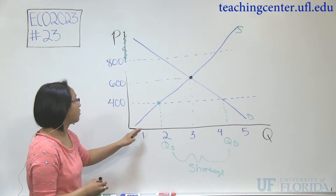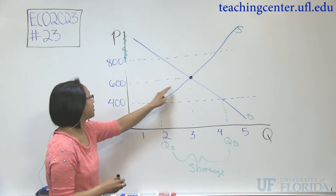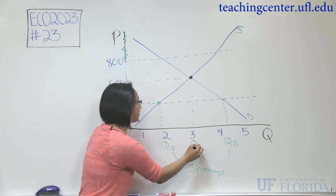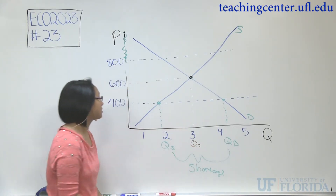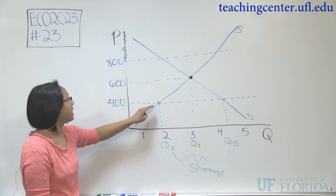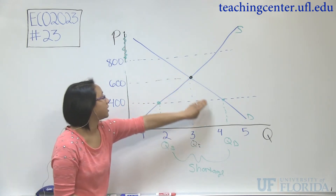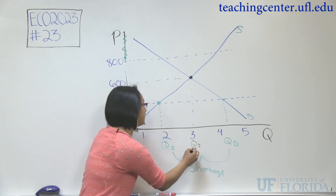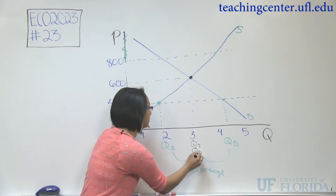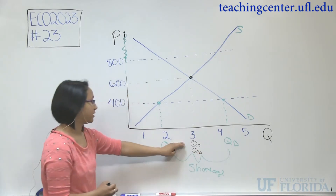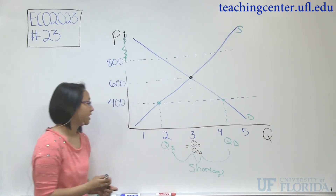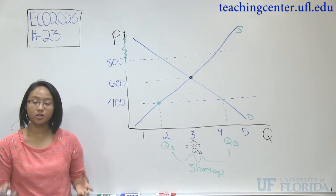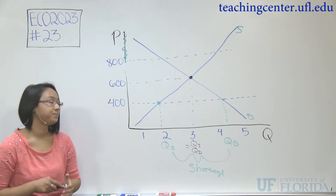As you can see, where the supply curve intersects the price of $600, we have quantity supplied of 3,000. And where the demand curve intersects the price, we have quantity demanded of 3,000. They're equal, so there is neither a shortage nor a surplus.